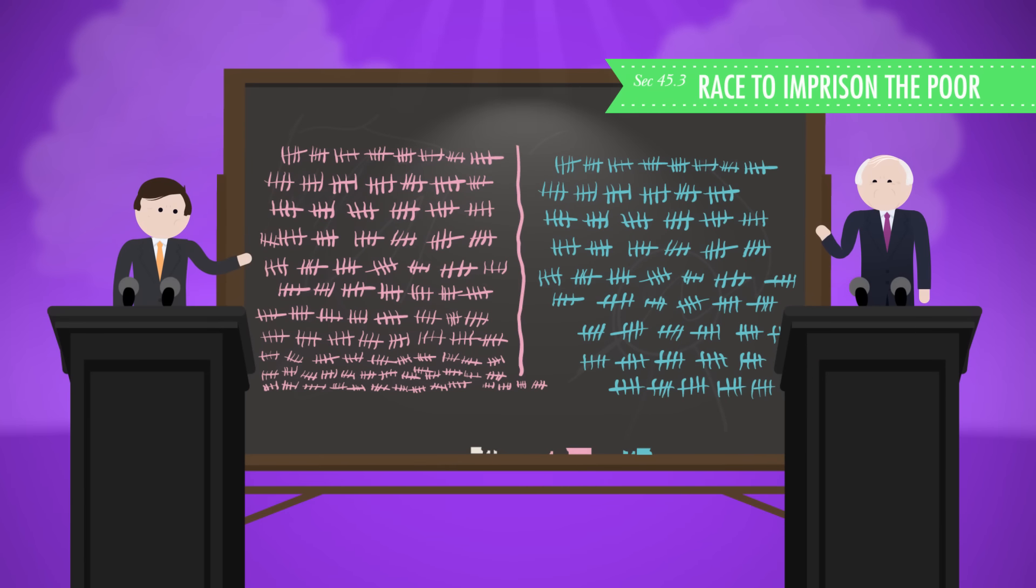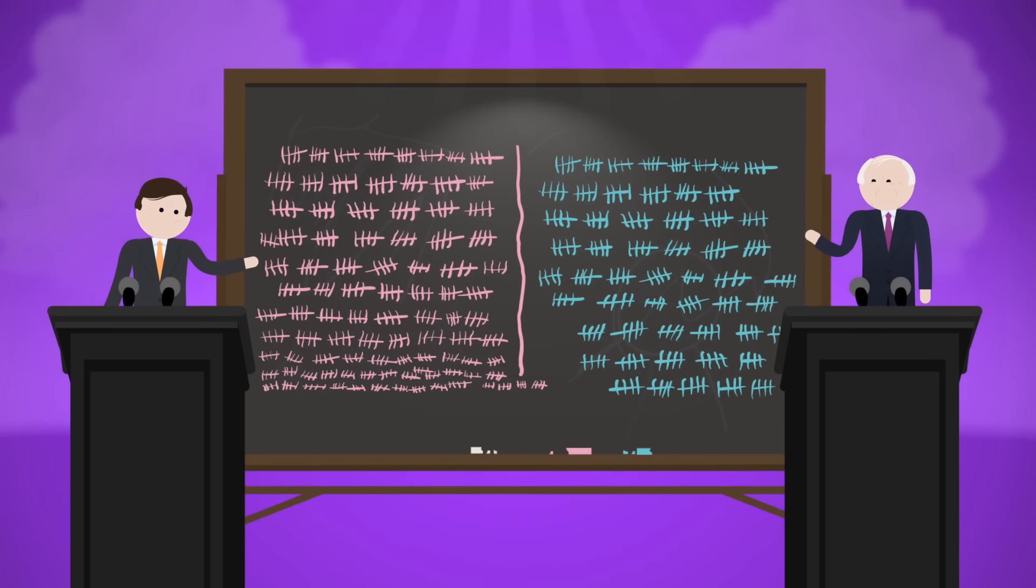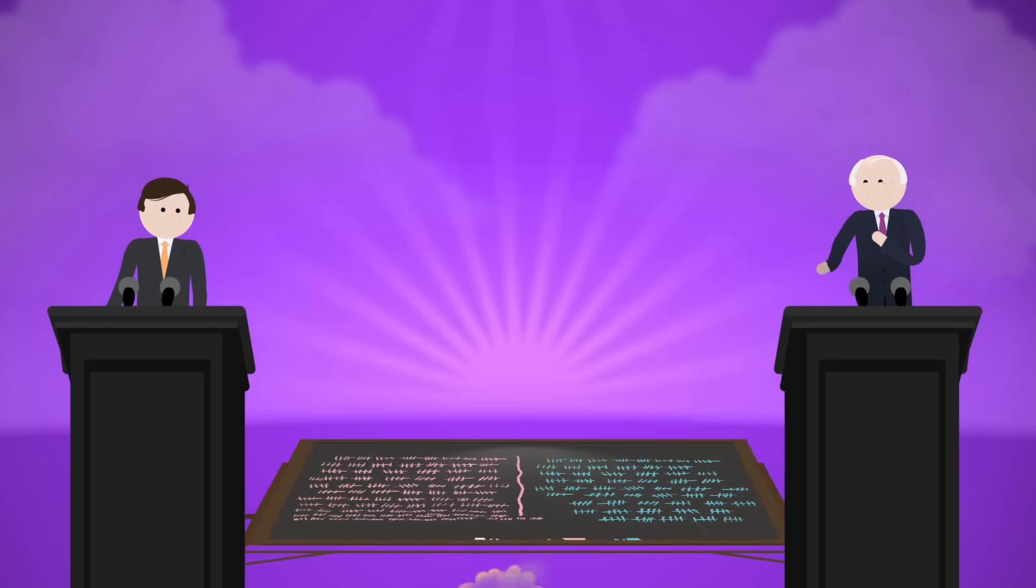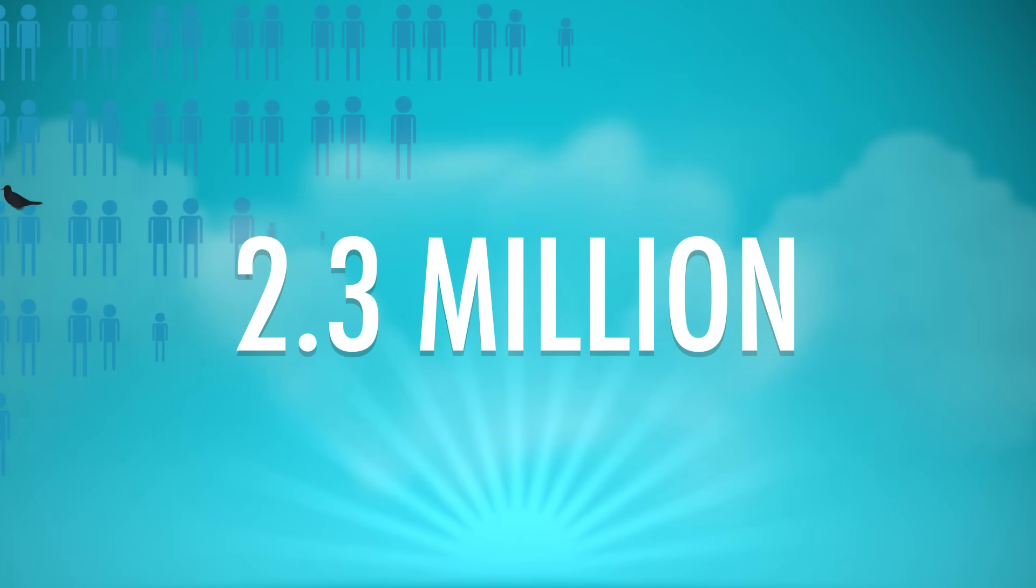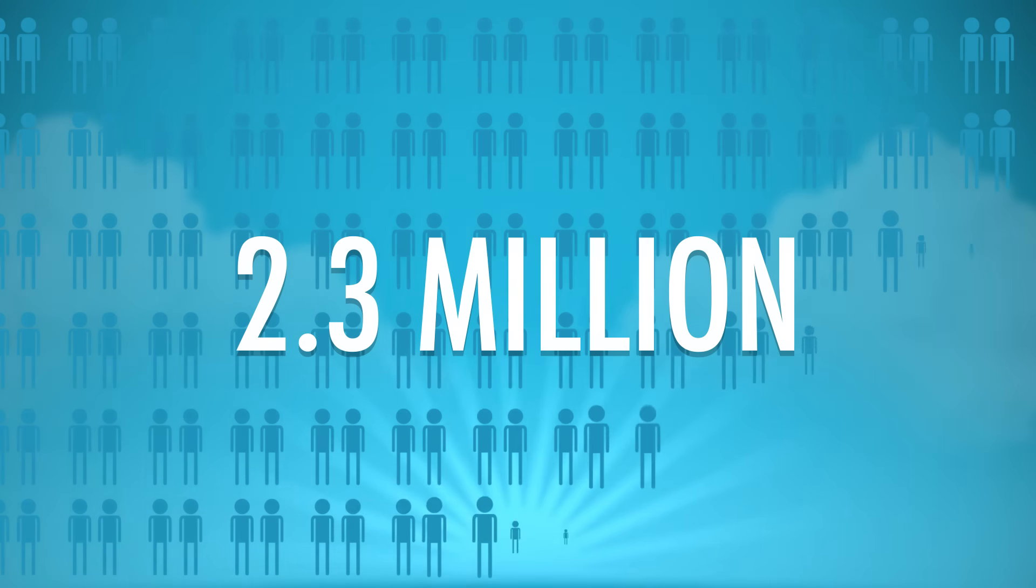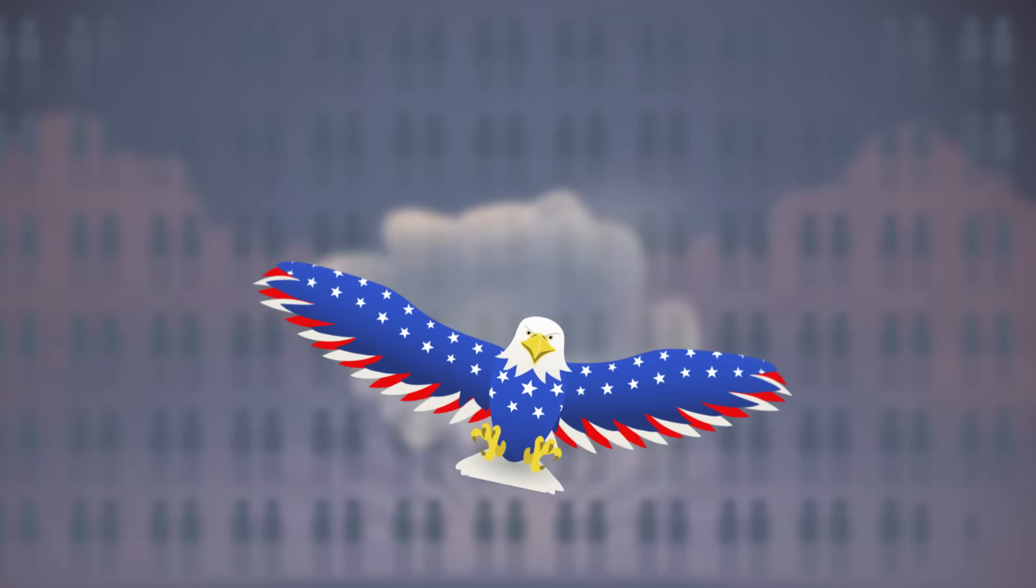Then there's the depressing rise in imprisonment. Politicians competed with each other to see who could be tougher on crime, and as the war on drugs continued, many state legislatures passed three strikes laws, meaning that people who were convicted of three felonies would go to prison for life. The number of Americans in prison skyrocketed. By 2008, it was 2.3 million, one-quarter of the total number of inmates on planet Earth. Thanks, Thought Bubble.